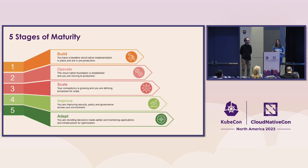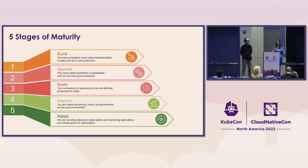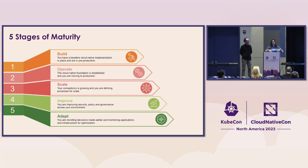Level two is where you actually start operating and move into production. You might be doing it with one or a few applications, but it's not scaled out yet — you're still proving the model to your business. Level three is really when you start to scale, and the organization has become fully committed to cloud-native. Level four is where you start to improve all of those decisions you made in the beginning — security, compliance, cost. And finally, level five, we've renamed to Adapt, where you're starting to adapt what you've done to further ways of working.